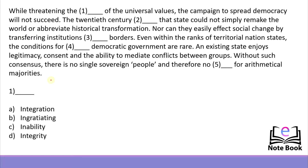Let us read it first: 'While threatening the blank of the universal values, the campaign to spread democracy will not succeed. The 20th century blank that state could not simply remake the world or abbreviate historical transformation, nor can they easily affect social change by transferring institutions blank borders. Even within the ranks of territorial nation states, the conditions for blank democratic government are rare. An existing state enjoys legitimacy, consent, and the ability to mediate conflicts between the groups. Without such consensus there is no single sovereign people and therefore no blank for arithmetical majorities.'